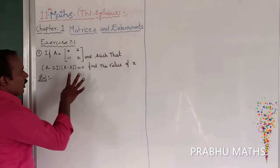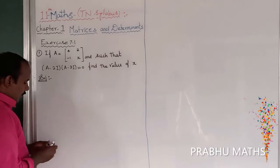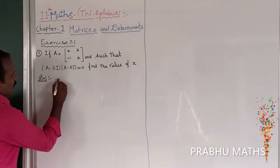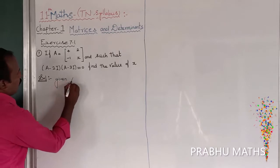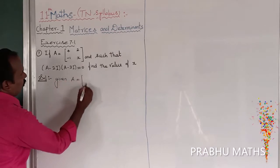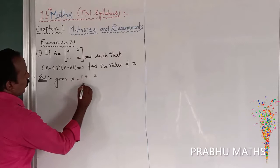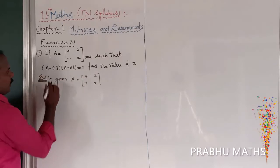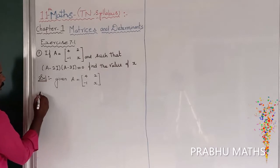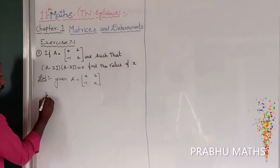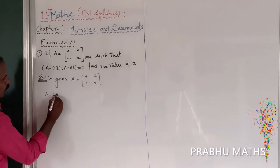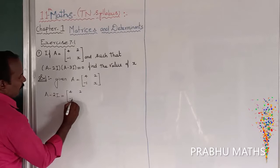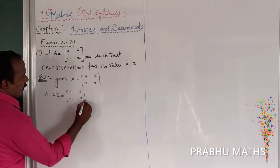First of all, given that matrix A equals [4, 2; -1, x]. First, let us find out A minus 2I. The condition says let us find out A minus 2I, so that is equal to A — the A value replaced by [4, 2; -1, x] — minus 2 into the identity matrix.